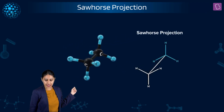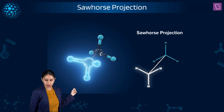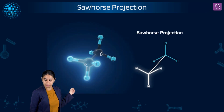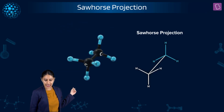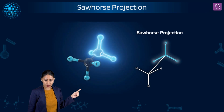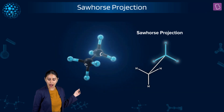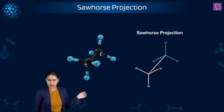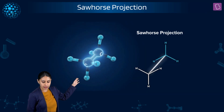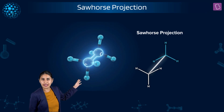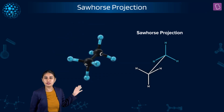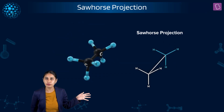Let me observe the sawhorse projection of ethane once again. See how the first carbon is highlighted, then the second carbon is highlighted, and then the carbon-carbon sigma bond is highlighted. This is how we represent the sawhorse projection.